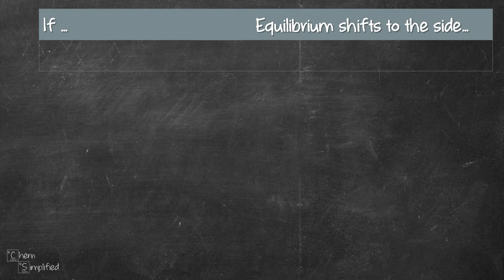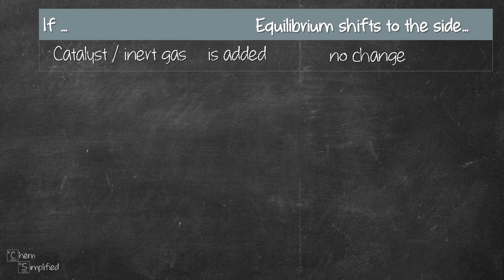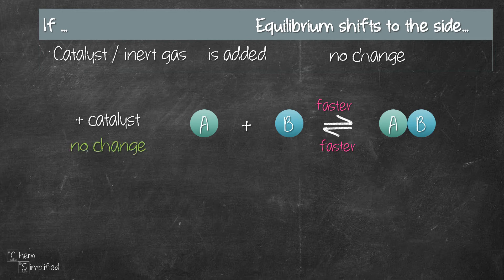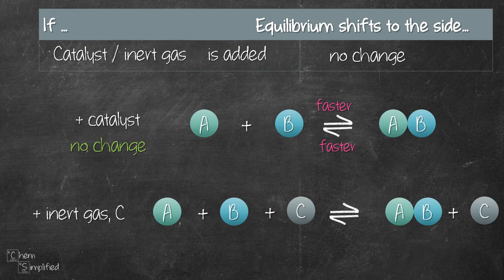Sometimes questions ask about the equilibrium shift when a catalyst or inert gas is added. Adding a catalyst has no impact on the equilibrium shift — it affects the rate of both the forward and reverse reactions, making both go faster, but it does not change the concentration of reactants and products and does not cause any stress to the system. Similarly, adding an inert gas at constant pressure lowers the concentration of all gases in the reaction — both reactants and products — meaning it does not cause any imbalance to the equilibrium, so there is also no change to the equilibrium position.